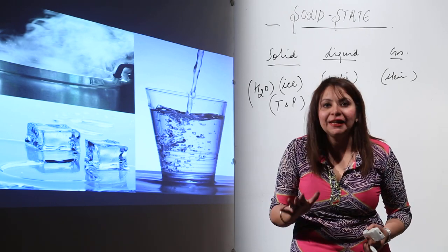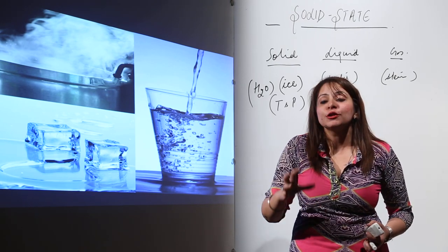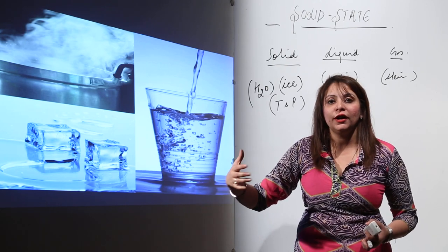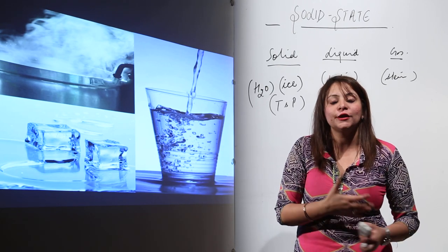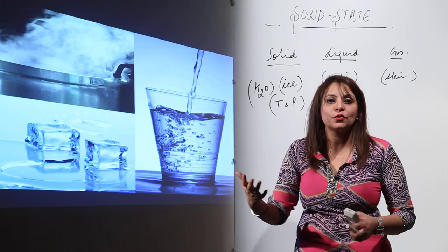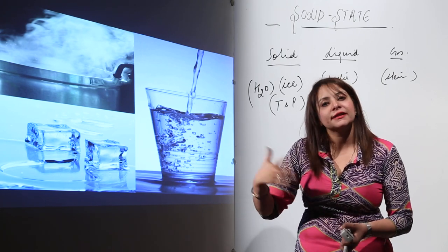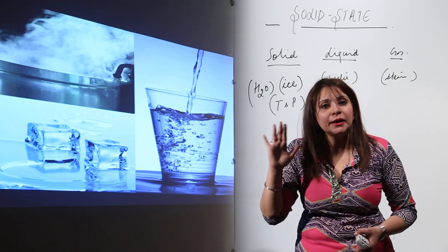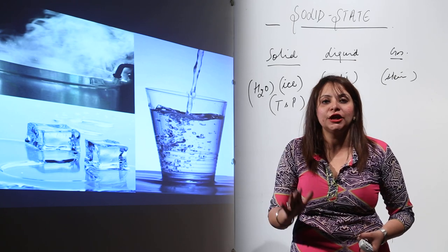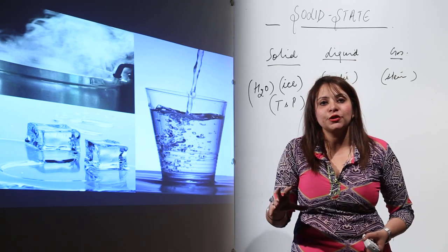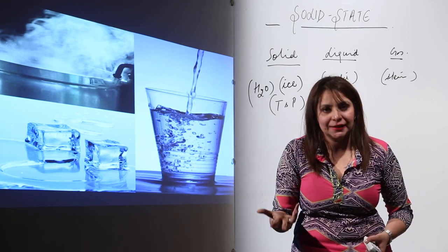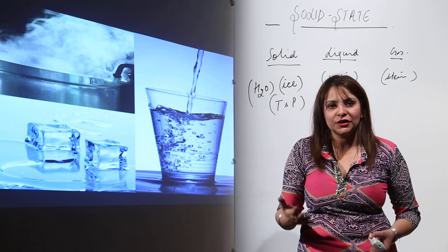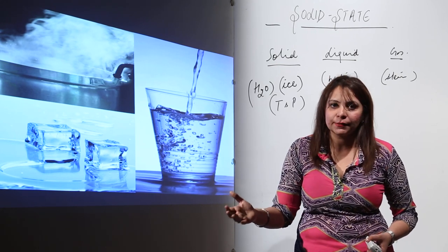At a fixed temperature and pressure we get ice; at another fixed temperature and pressure we get water; and likewise we get steam. So it is all a matter of the condition of temperature and pressure in which the substance is present — that is why we get different forms: solid, liquid, or gas.